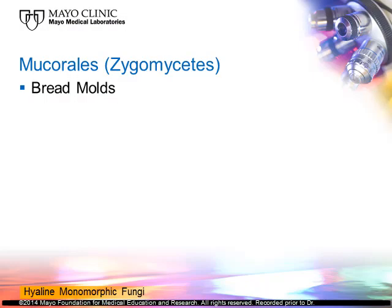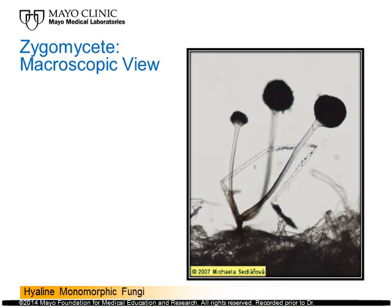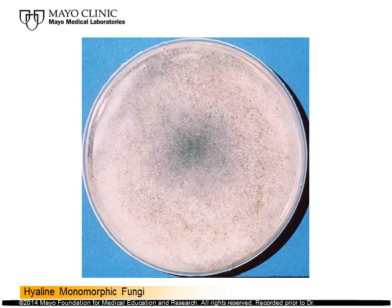The mucorales or zygomycetes have been defined as the bread molds, though they don't grow on bread as often as they used to because of preservatives. They'll grow on fruit, vegetables, and many things that sit around, even in the refrigerator. This image shows the fruiting head and supporting structure of a zygomycete — the big round black balls at the top are called sporangia, and below is the stalk that supports them called the sporangiophore. A culture of the zygomycete appears woolly and coarse, with black dots that are the sporangia.